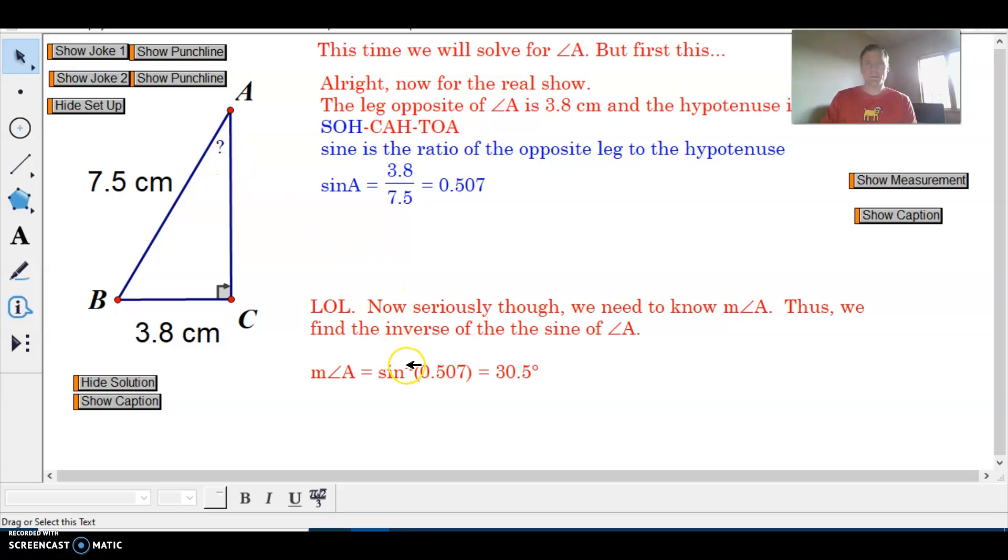It's the inverse sine of 0.507. 0.507 is the sine of some angle, and inverse sine gives you what that angle is. So 30.5 degrees. So if I need to know angle B, I'll do 90 minus 30.5 degrees. So that would be 59.5 degrees.